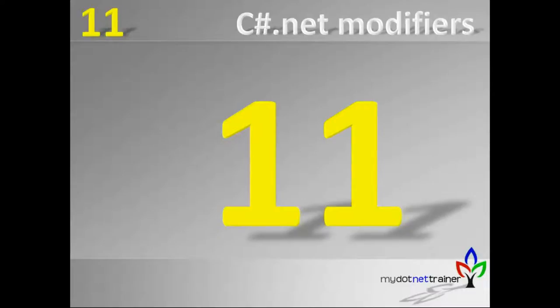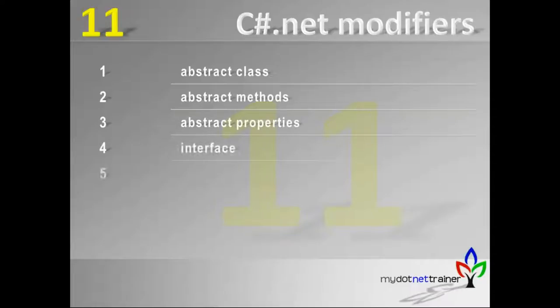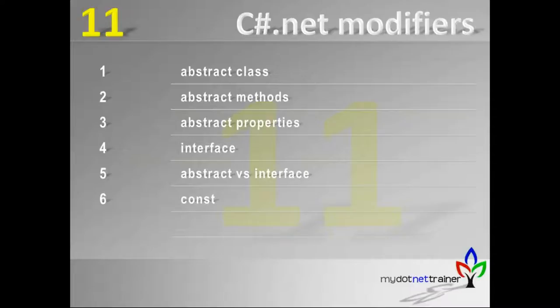We are in session 11 today and we'll be getting into C# .NET modifiers. We already saw the access modifiers in the previous session. In this session, we'll see the other modifiers: abstract class, abstract methods, abstract properties, interface, abstract versus interface, and constants in C# .NET.